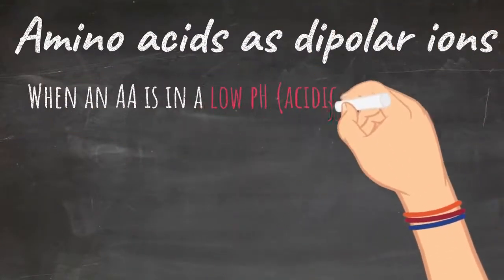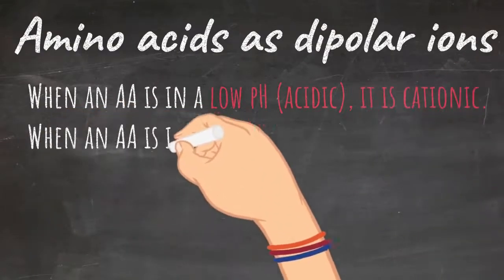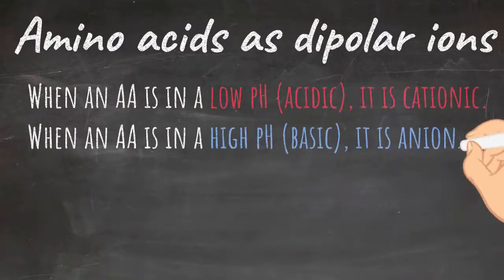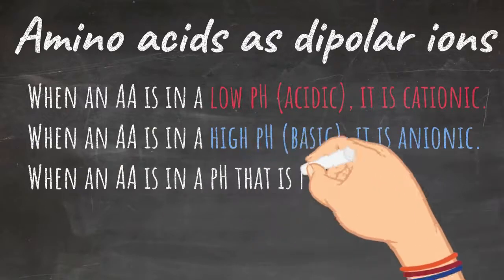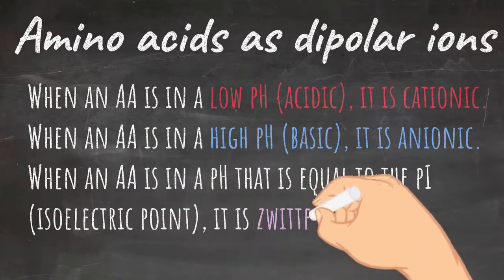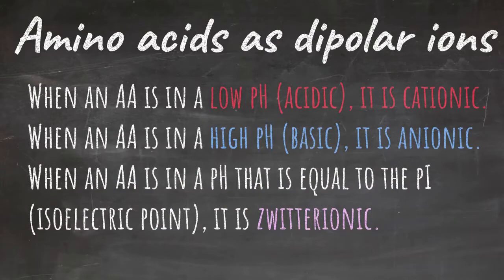When amino acids are in a low pH or acidic, then they are in cationic form. When an amino acid is in a high pH or basic, it is in an anionic form. When an amino acid is in a pH that is equal to the isoelectric point, it is zwitterionic.